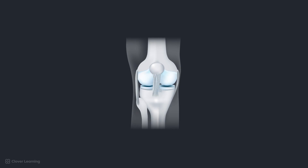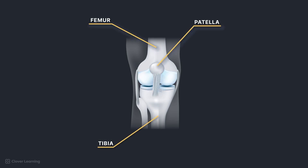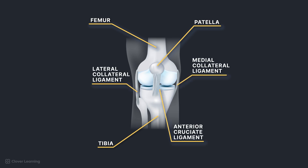The knee joint consists of a synovial gliding joint at the patellofemoral articulation and a synovial modified hinge joint at the femorotibial articulation. The knee joint is a complex joint composed of the femur, tibia, and patella held together by a complex of ligaments. The primary ligaments include the anterior and posterior cruciate ligaments and medial and lateral collateral ligaments. When a patient presents with a knee injury, they have typically injured one of these ligaments, or the medial or lateral menisci, which are the articular cartilage in the knee. They will need additional imaging, such as an MRI.